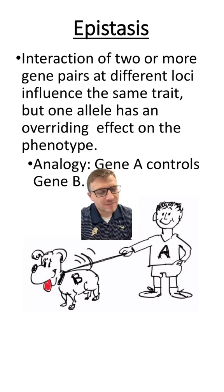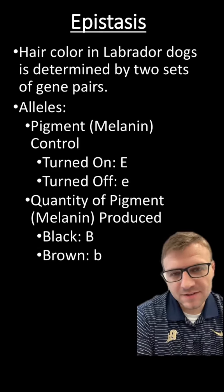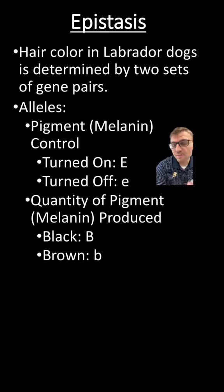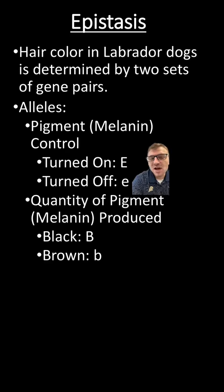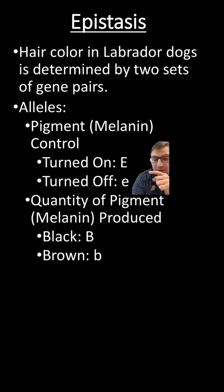Let's give you an example with dogs. Hair color in labs is a perfect example of epistasis, where you have two genes that are going to interact with each other. This first gene is the pigment gene, or the melanin control gene. As long as there's one dominant letter in the first genotype, that gene is going to be activated. However, if there are two recessive letters in the genotype, that gene is going to be deactivated.